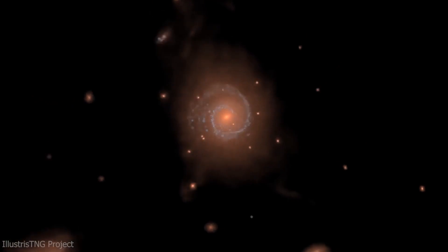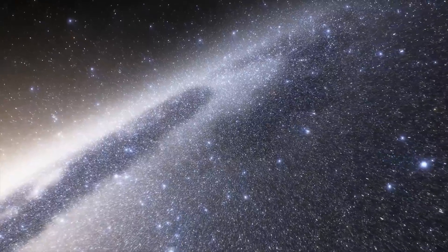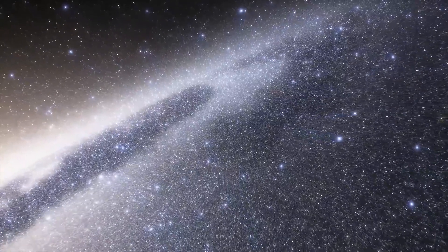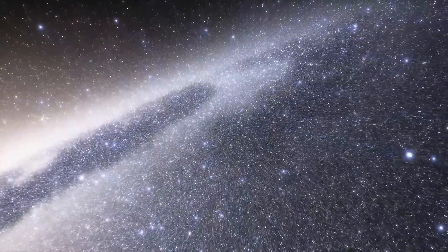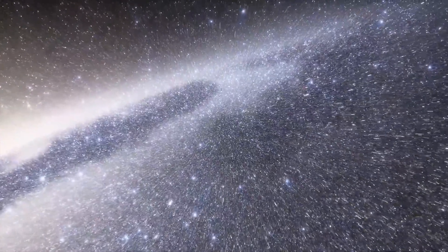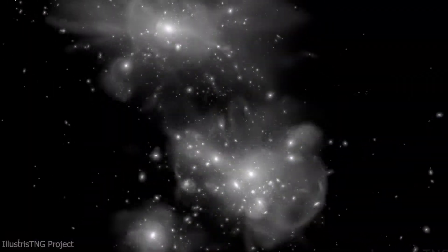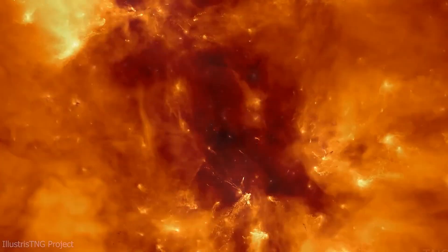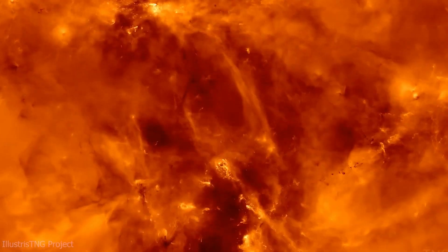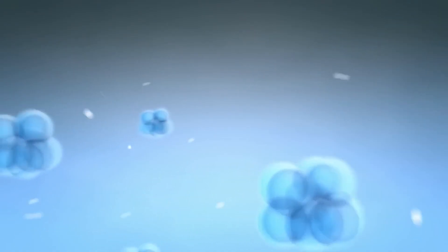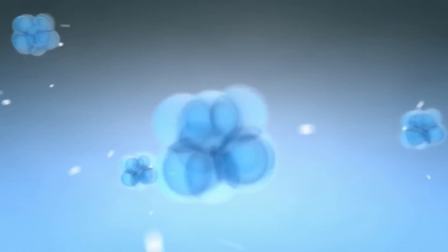So how did we go from a dark universe to one filled with stars? It was a slow process, taking millions of years. As the universe expanded and cooled, the radiation pressure decreased, allowing matter to clump together more easily. But it wasn't just a matter of waiting for things to cool down. The process of star formation is complex and requires just the right conditions. You need dense clumps of gas, but you also need them to be cool enough for gravity to overcome the pressure and start the process of nuclear fusion.